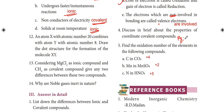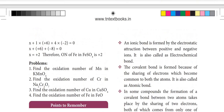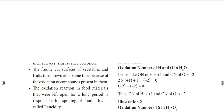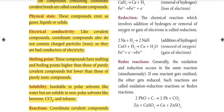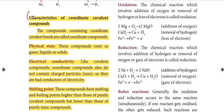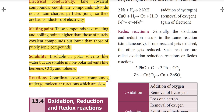Fourth question: discuss in brief about the properties of coordinate covalent bonds. The characteristics of coordinate covalent bonds are covered at page number 156.